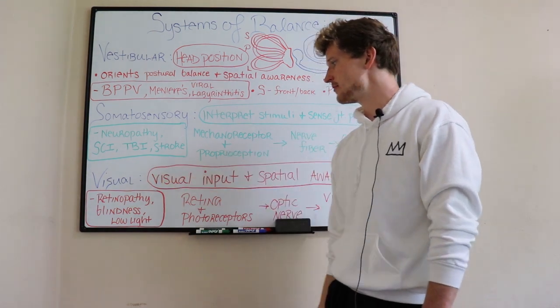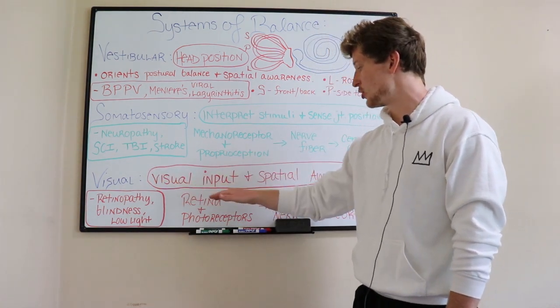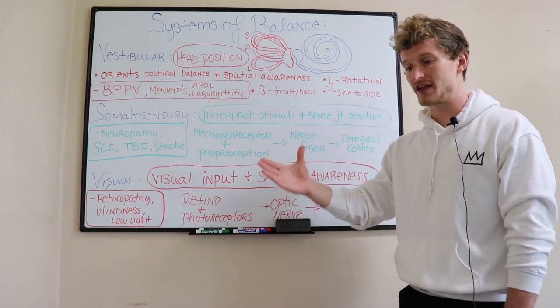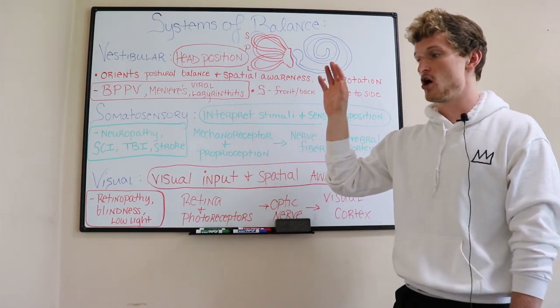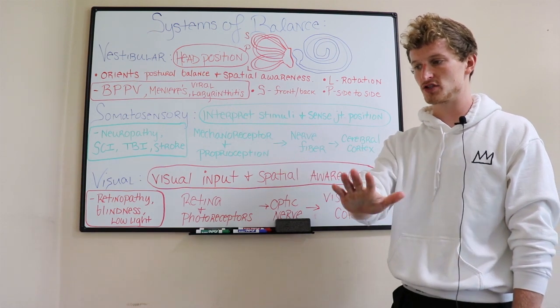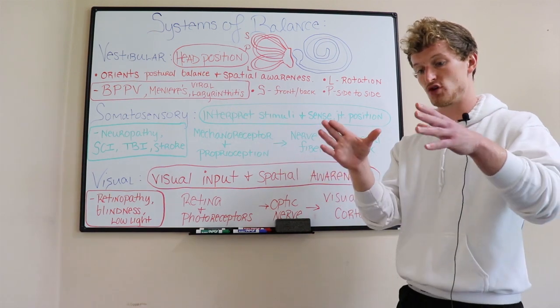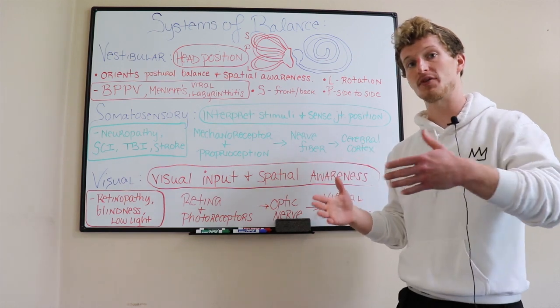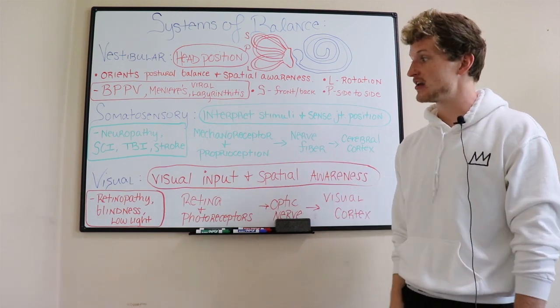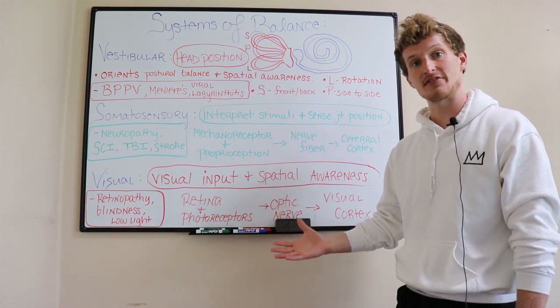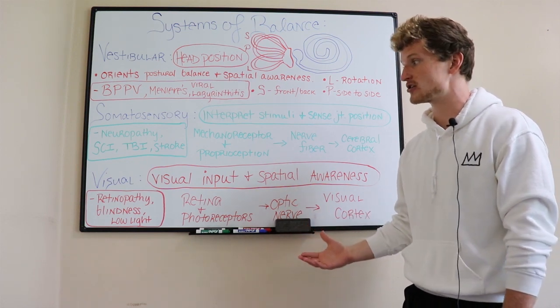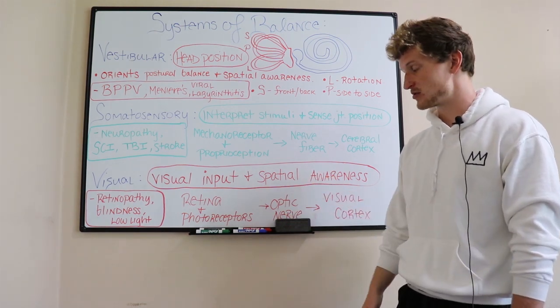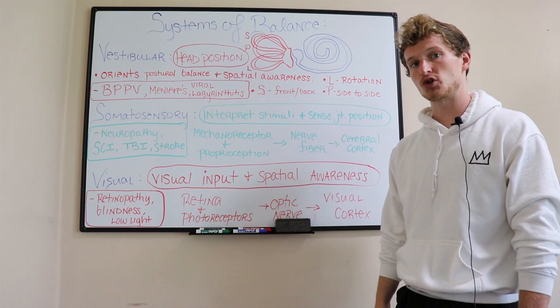Finally, your visual system provides visual input and spatial awareness. I'm getting visual input every day. If I walk into my kitchen, I'm getting visual input of where my fridge is located, where my stove is located. I'm understanding where those are in space in relation to me, and I'm able to navigate around them without running into them. If anybody has ever closed their eyes and tried to navigate their house, which they can do easily with eyes open, they realize how much our visual input orients us to space and helps with our stability.